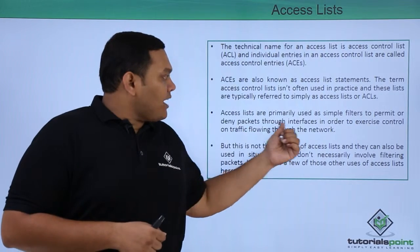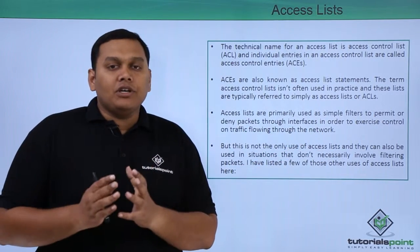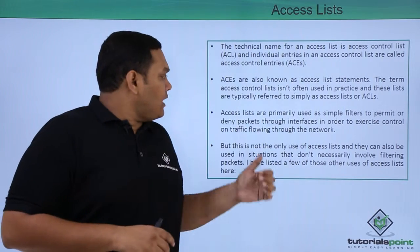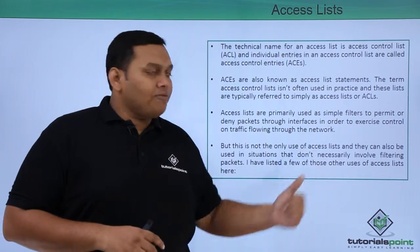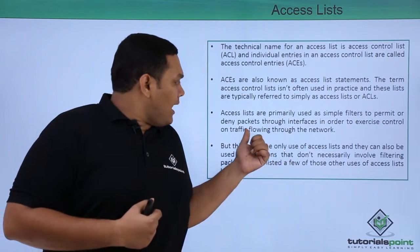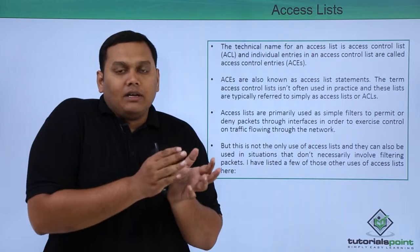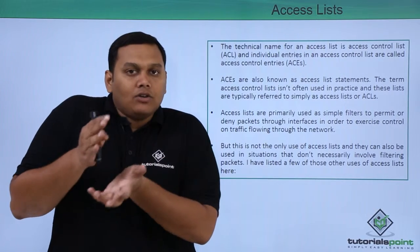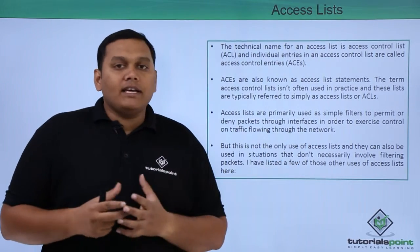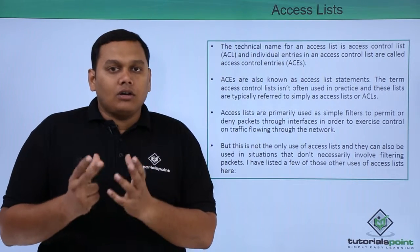Access lists are primarily used in filtering — to permit a user or host to get access to your router and also to deny packets through interfaces, in order to exercise control over traffic flowing through the network. This controls the access flow of packets and also provides a special security tool to your router.